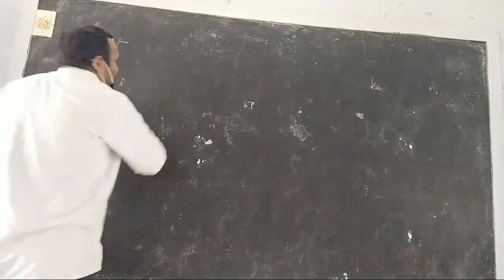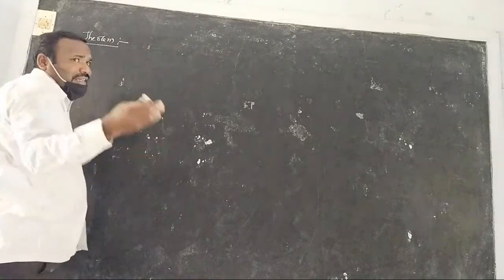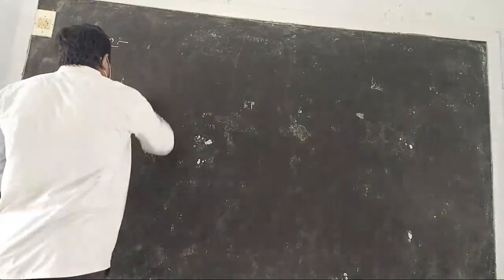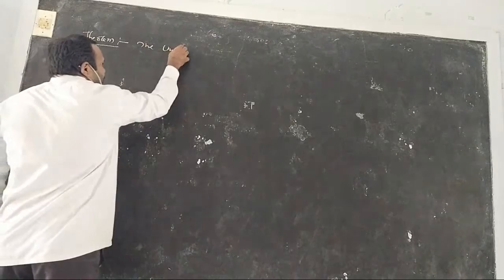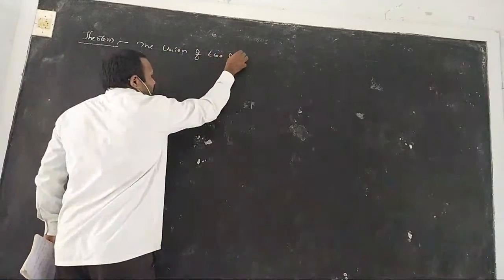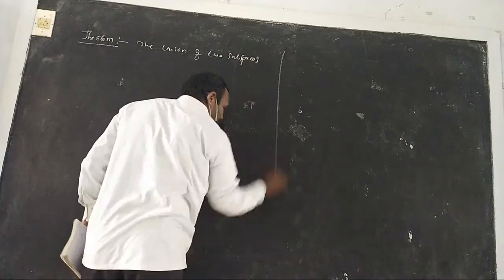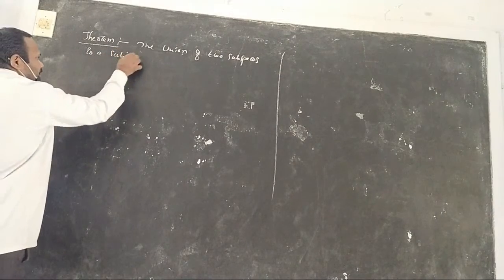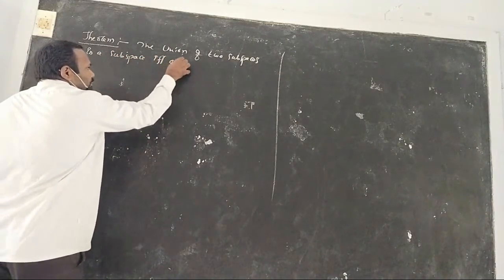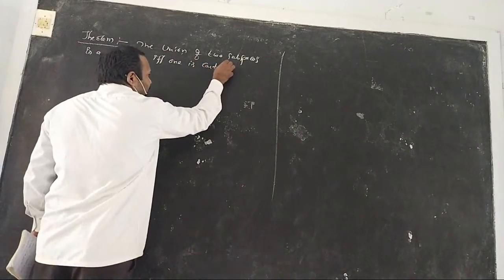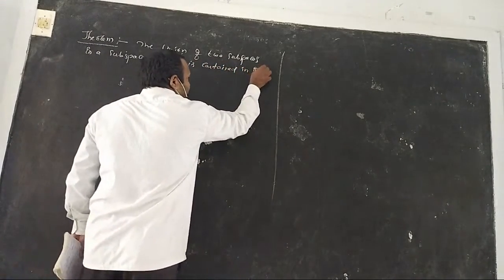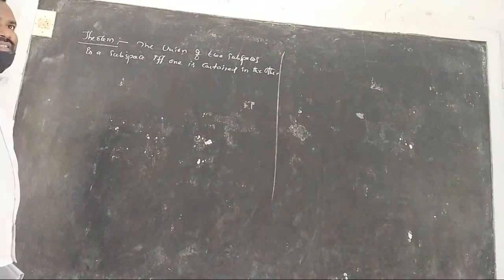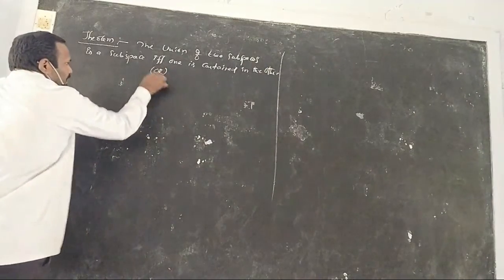With one condition — what is that condition? Intersection of two subspaces is also a subspace when one is contained in the other. One is a subset of the other side. So let us try. You can write the statement on the side.